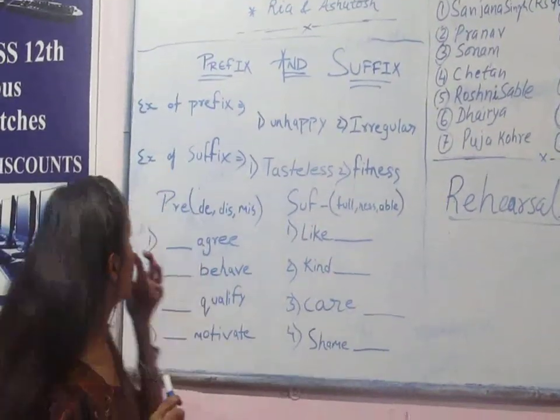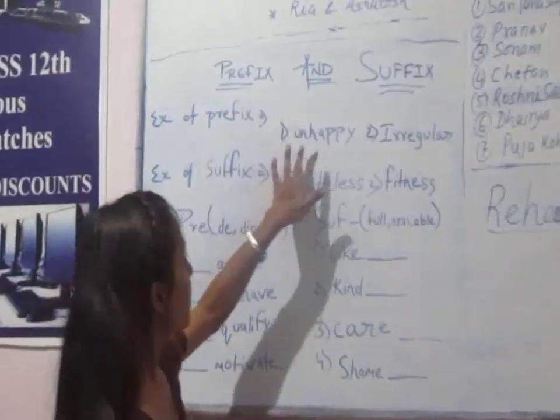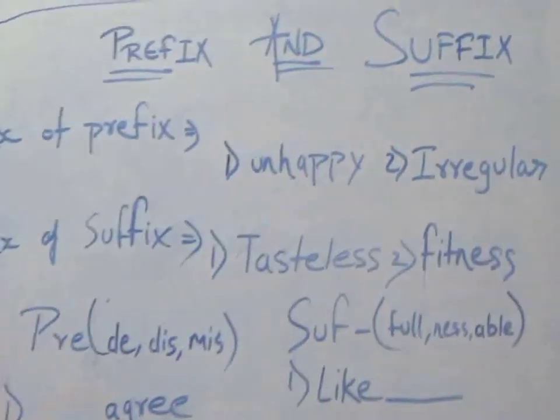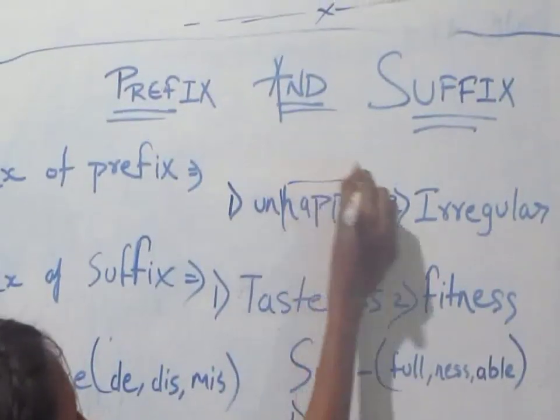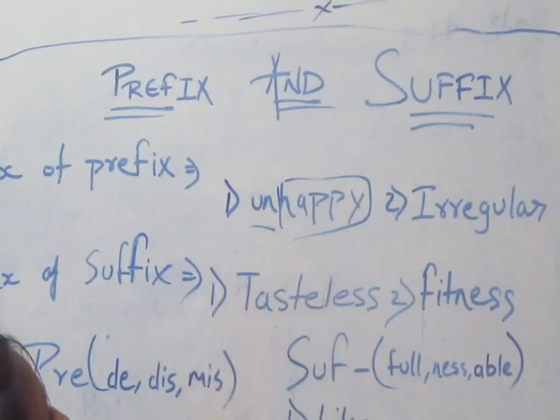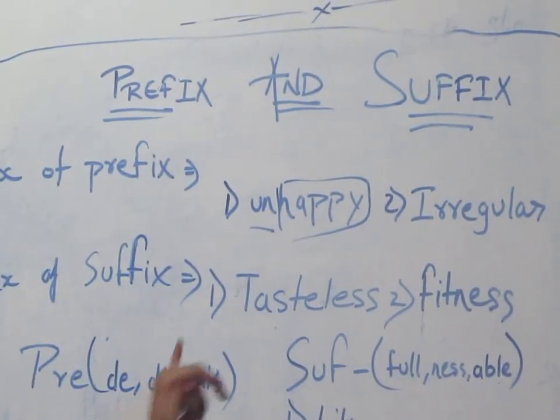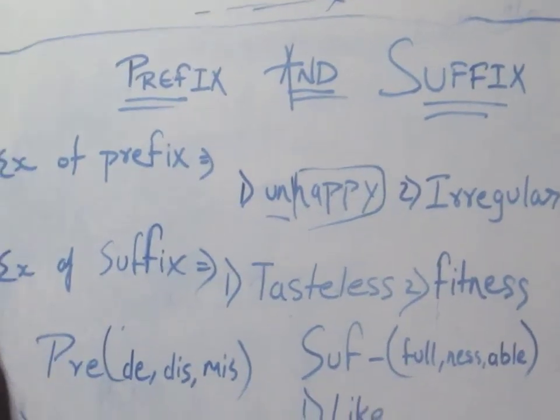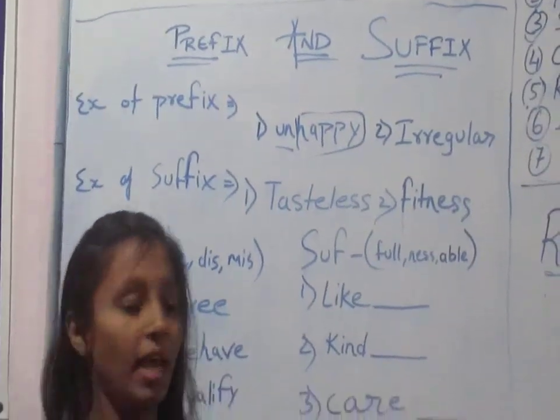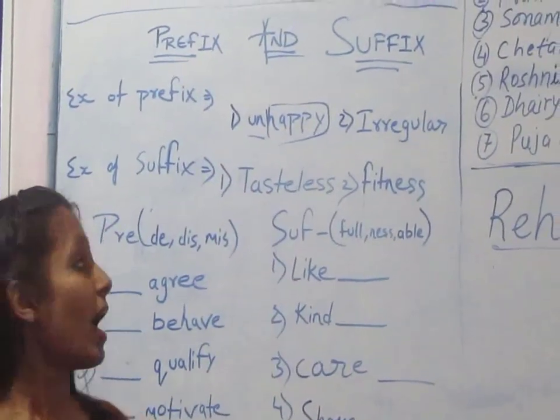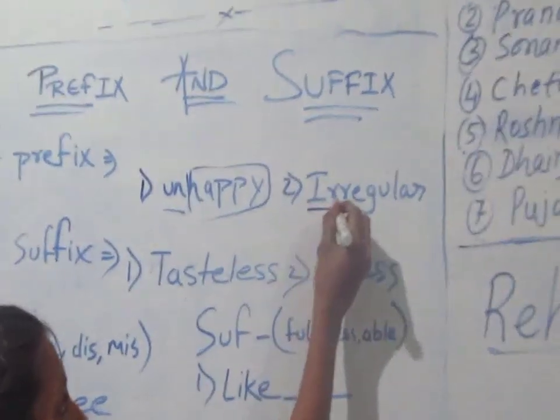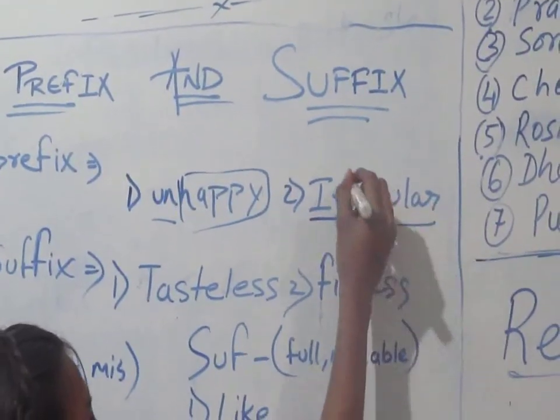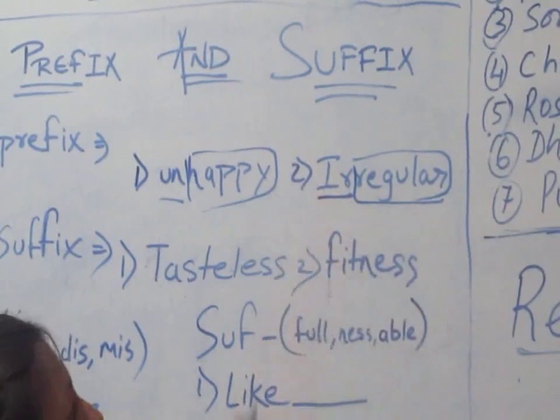And like here, example: unhappy and irregular. You can see that happy is a word and in that we attach the un, which is a prefix, and due to that its meaning is changed. Its meaning is like not happy. And irregular is also like that. Regular is a word and in that we add ir, so its meaning is changed.